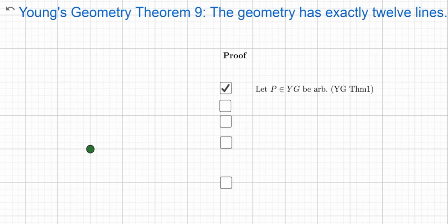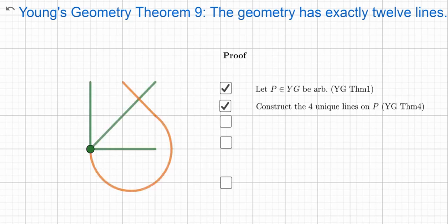We're going to start with an arbitrary point which we can get because of theorem 1, which says there are at least four points in Young's geometry. We're going to construct the four unique lines that are on this point P, and that's by Young's theorem 4, which says there are exactly four unique lines on P.